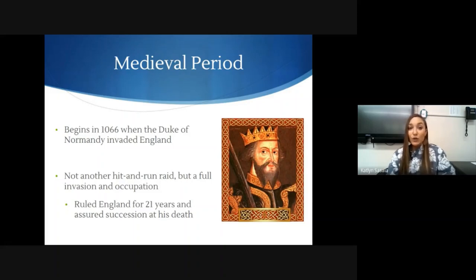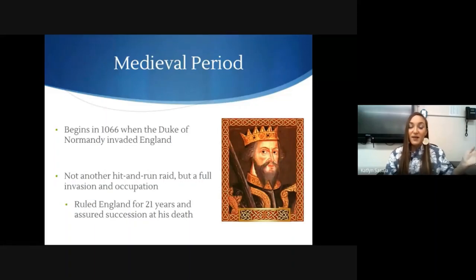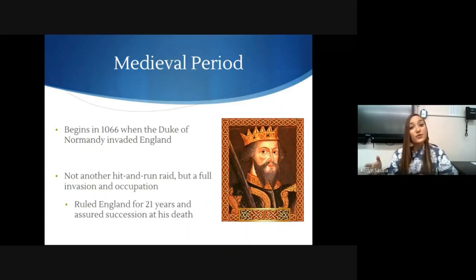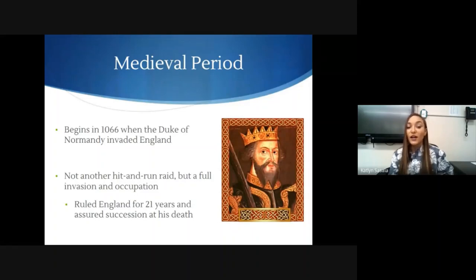In 1066, the Duke of Normandy invaded what is now England. All the way back in the Anglo-Saxon period, they weren't even a country yet — they were still the British provinces. But through the last 600 years or so, they became a country, England. The Duke of Normandy, his name is William. He was Duke of a place in France. He takes his guys and they attack England. The Anglo-Saxons had been attacked many times before, but usually it was a raid — they took money or resources and then left. But this attack from the Duke of Normandy was a full-on invasion and occupation.